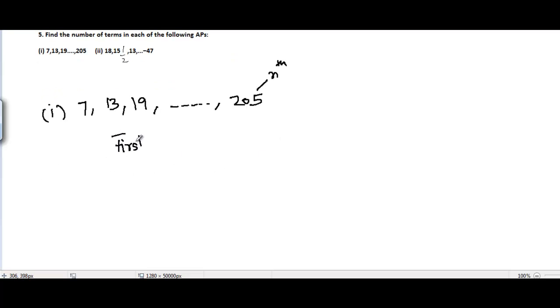We have first term a = 7 and common difference - common difference is the difference between every two consecutive terms - it's 13 minus 7 equals 6, or you could say 19 minus 13, it would always come equal to 6.